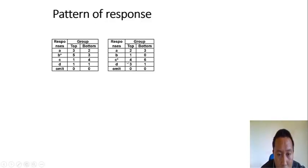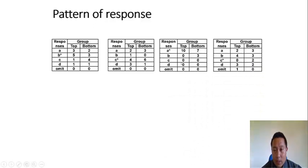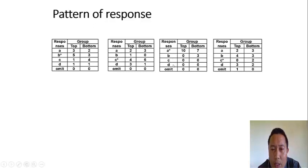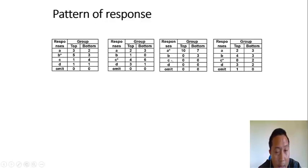Table 2 is also okay; if you look at distractor B, it's fine — no problem. But if you look at Table 3, there is a problem. The correct answer key is A, but nobody chose B, nobody chose C, nobody chose D — all students in the top group chose the correct answer. This indicates something is wrong with the distractors, because they are not effective or functional. We have to modify distractors B, C, and D.